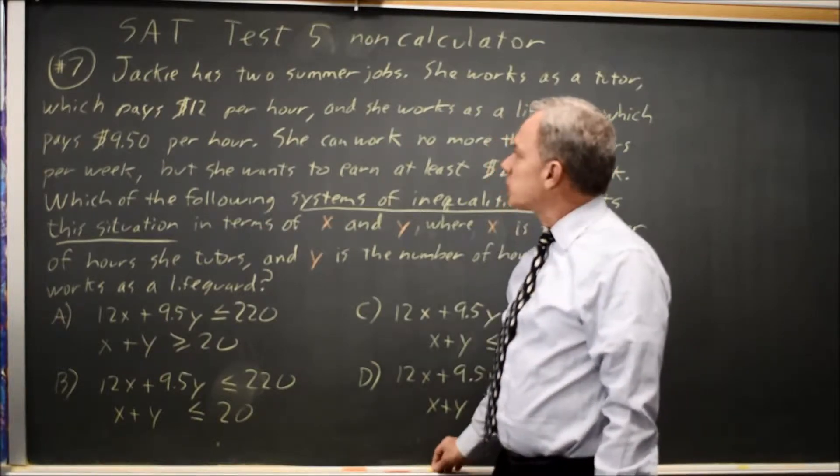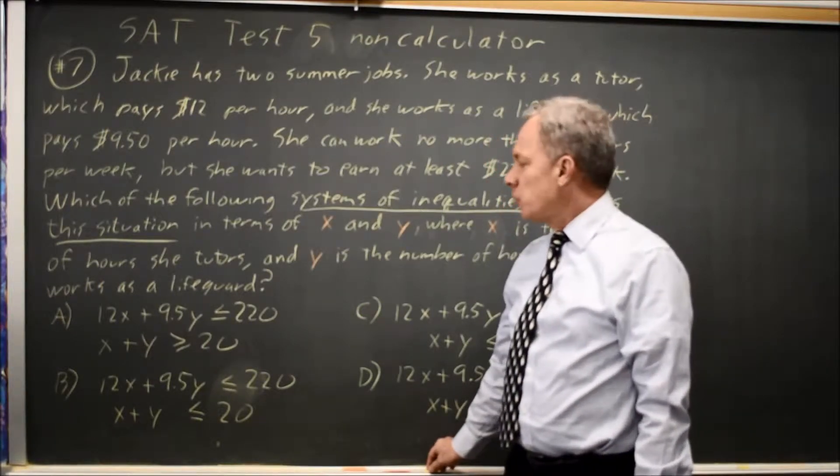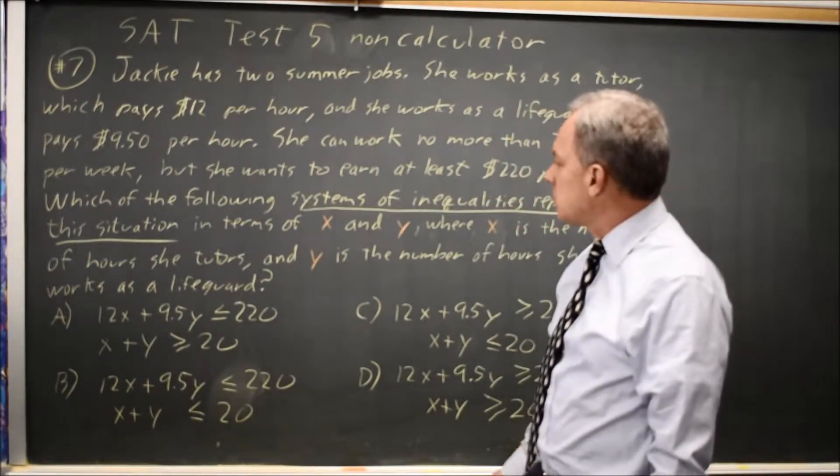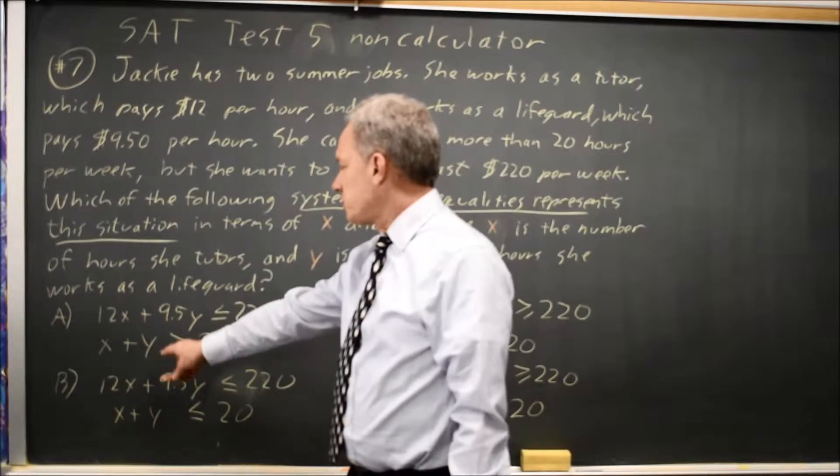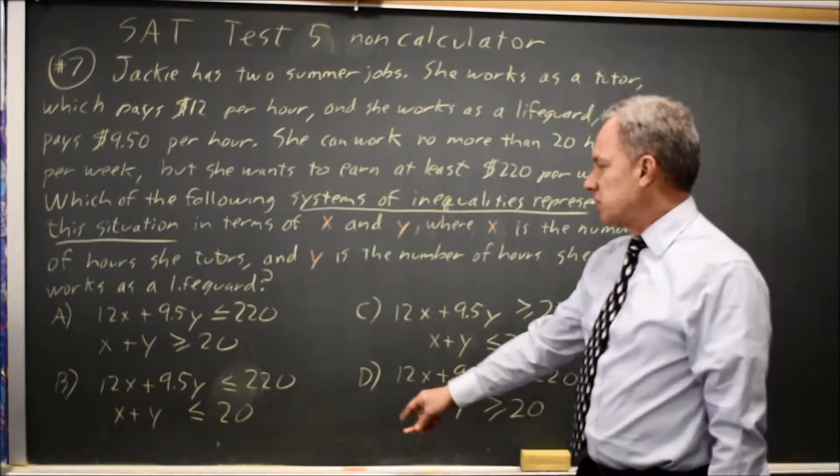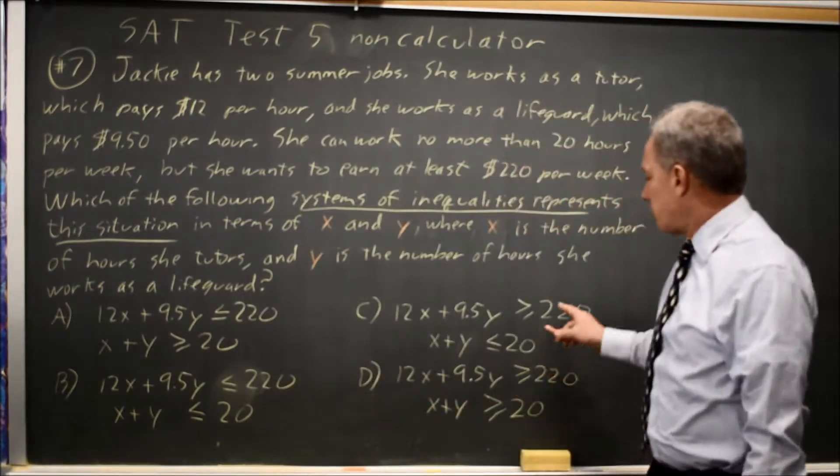So in this case, what we're trying to do is identify which of the four options represents this situation. And if you look, all four options have 12x plus 9.5y on the left, and either less than or equal to 220 or greater than or equal to 220.